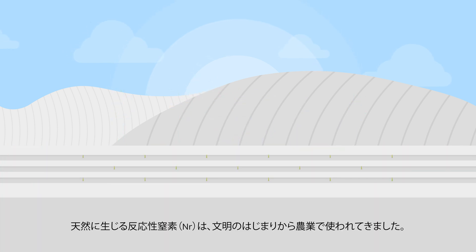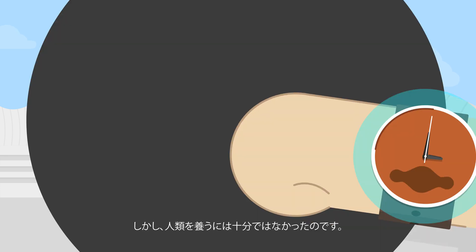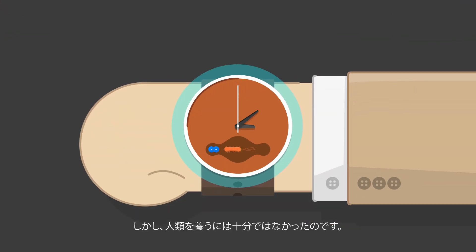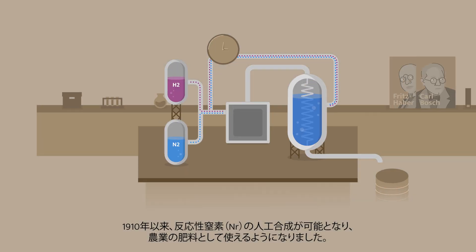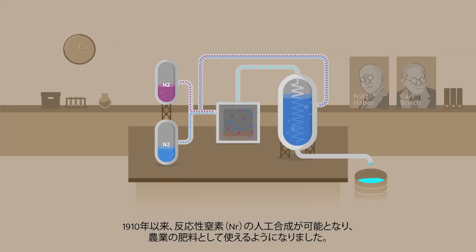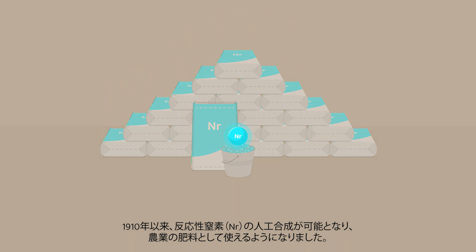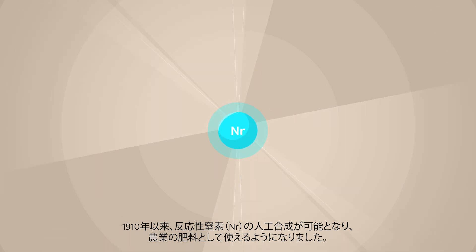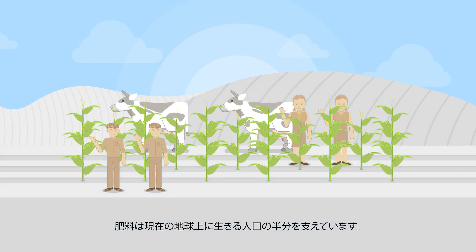Natural reactive nitrogen has been used in agriculture since the beginning of civilisation, but it was never enough to feed humankind. Since 1910, it was possible to create reactive nitrogen and make it available to agriculture in fertilisers. Fertilisers support half the population living today.